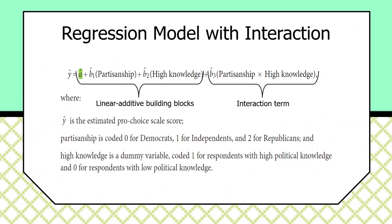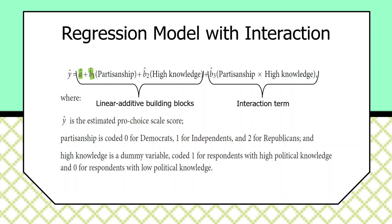For all low-information respondents, we can use the linear additive building blocks to figure out the effects of partisanship among low-knowledge individuals and the base effect of the high-knowledge dummy. The interaction term takes on a value of 0 for Democrats, 1 for independents, and 2 for Republicans. B3 tells us how much to adjust the effect of partisanship when knowledge increases from 0 to 1.